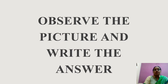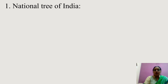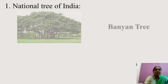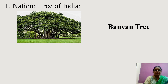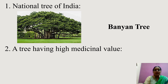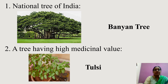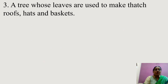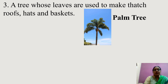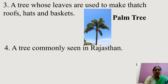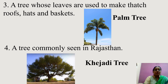Our next question is observe the picture and write the answers. I will show you some pictures and you have to give the answers. The first one is national tree of India — the national tree is the Banyan tree. A tree having high medicinal value — the answer is Tulsi. A tree whose leaves are used to make thatched roofs, hats and baskets — the answer is palm tree. A tree commonly seen in Rajasthan — the answer is Khejadi tree.